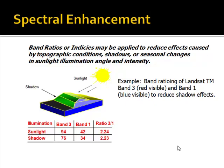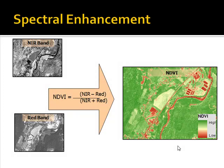Spectral enhancement can be used to reduce the effects caused by topographic conditions, shadows, or seasonal changes in sunlight illumination angle and intensity. This is typically accomplished through band ratios or indices. The theory is that while values in individual bands may differ, the relative values of those bands remain consistent. For example, the Normalized Difference Vegetation Index (NDVI) is calculated using IKONOS satellite imagery as: near infrared band minus red band, divided by near infrared band plus red band. This is possible because satellite imagery within our GIS is simply numbers — we can add, subtract, multiply, and divide.